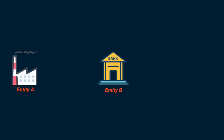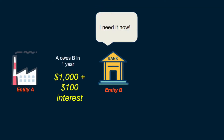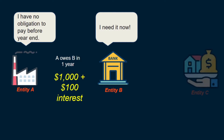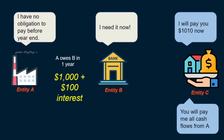Say entity A owes entity B $1,000 plus interest in one year's time, but entity B wants to release cash from the assets now. Contractually, entity B cannot force entity A to repay the principal and accrued interest before the stipulated term. In this case, what entity B can do is find some other entity, say entity C, that will pay entity B an amount upfront and obtain the right to receive all contractual cash flows from entity A.